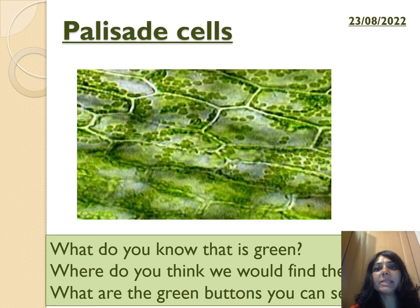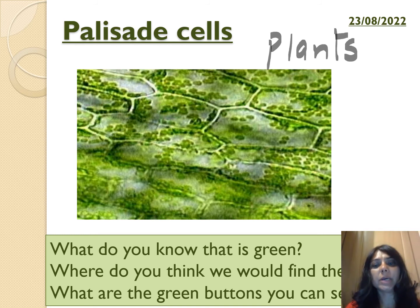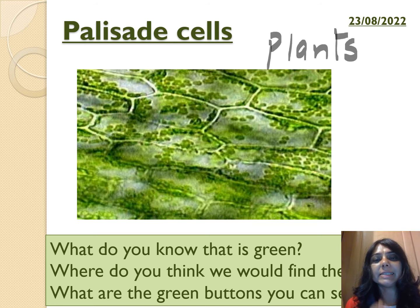These are palisade cells, found in plants. They are green in color because they contain chlorophyll, and their role is to absorb sunlight. They have a disc-like structure with a large surface area — the larger it is, the more sunlight you can absorb. The green color and sunlight are needed for photosynthesis.